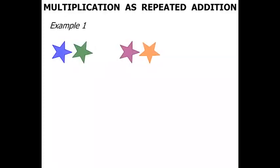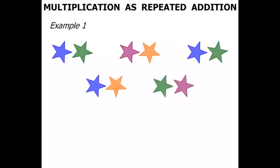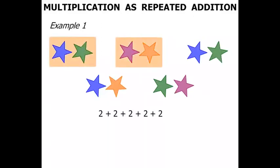Example 1. Start off with 2 stars, another 2 stars, 2 more stars, another 2, and finally another 2 stars. So as an addition, we've got 2 plus 2 plus 2 plus 2 plus 2. And let's see what that equals: 2, 4, 6, 8, 10. So that equals 10.